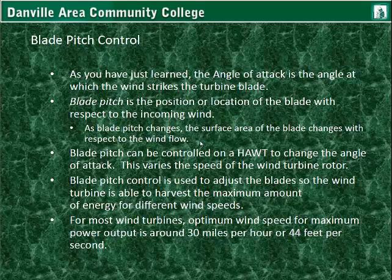As the pitch changes — imagine looking straight at the turbine blade, like holding your hand flat in front of you and then rotating it at your elbow and wrist — you can see that the surface area appears to get smaller. Your hand appears to get smaller as you turn it. That's what's going on with the blade: the surface area actually decreases when the blades are pitched in that manner.